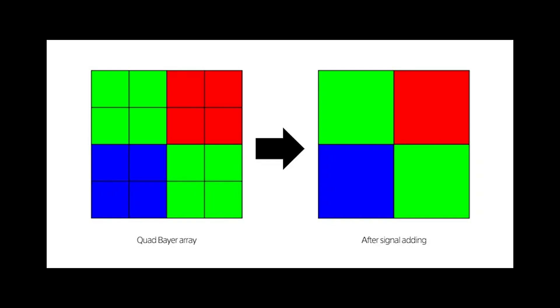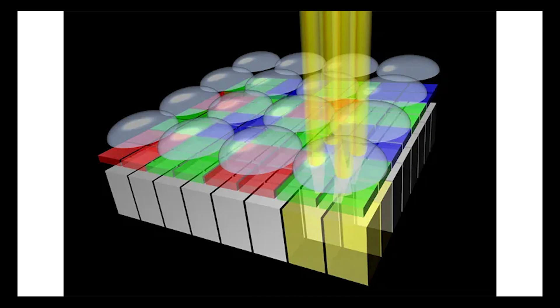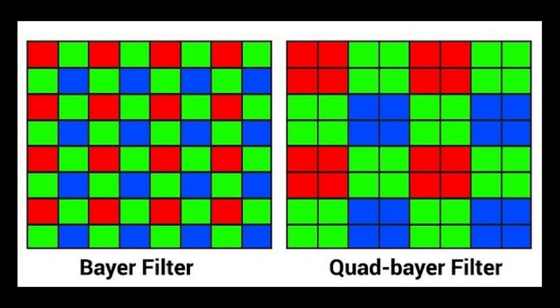But the main strength of the quad Bayer sensor is supposed to be when dealing with video, and most precisely with high dynamic range situations. Without getting into an in-depth technical analysis, to keep it simple, this sensor, after a discussion with the video processor, should be able to decide whether to use an entire pixel, half of it, or a quarter, to optimize the exposure of very bright or very dark areas.